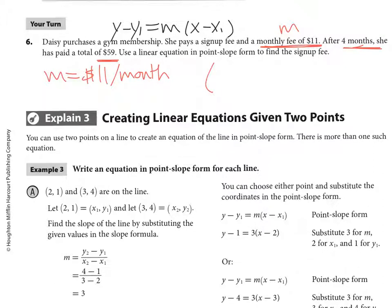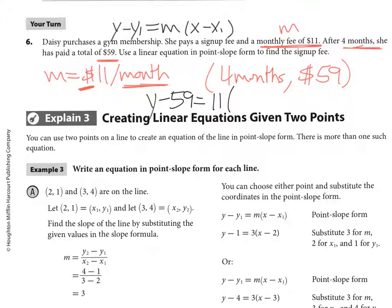So, what I have here is I have M is $11 per month. I have a point that is four months because that's my X. Remember, changing Y, we're changing X. And $59, there's my Y, which is in cost, dollar amount. So, I have a point. I have a slope. It's just not given to me in that form like in the previous problem. It's given to me in word problem. So, now I just plug into the formula. Would it be Y minus 59 equals? So, Y minus 59 equals 11 times X minus 4. There you go. That's it.